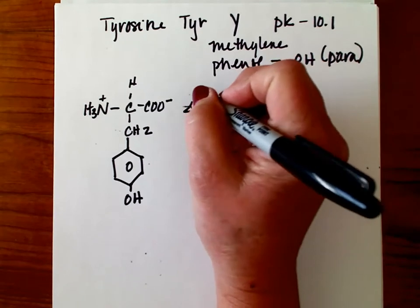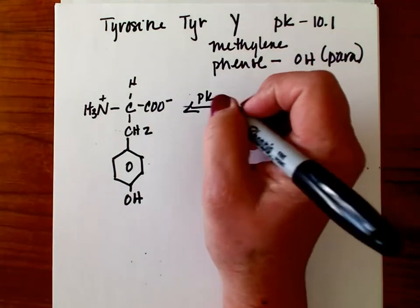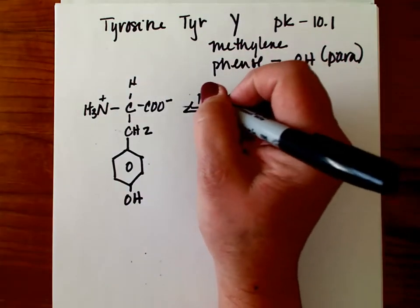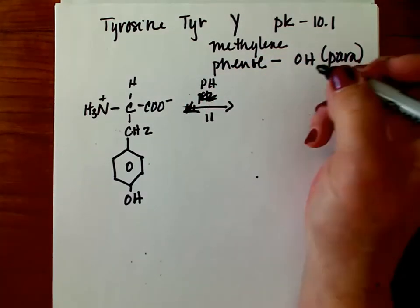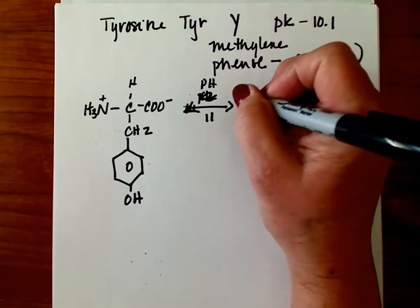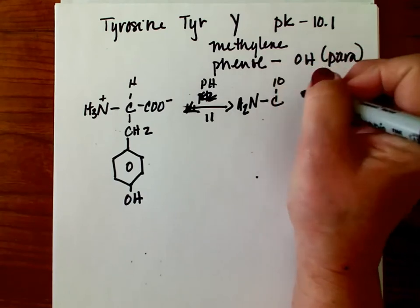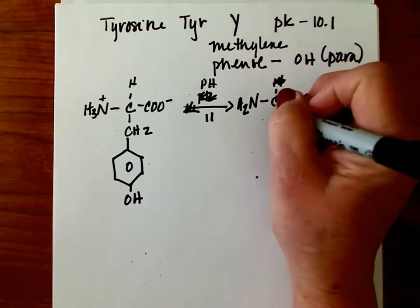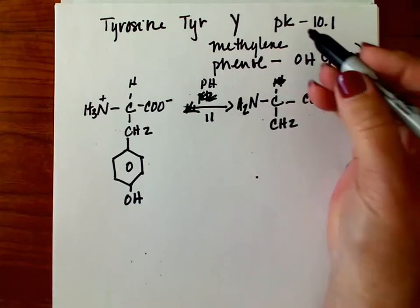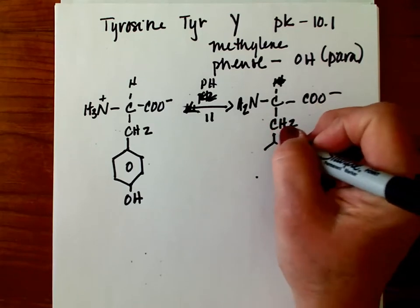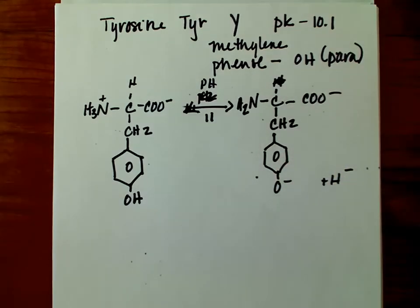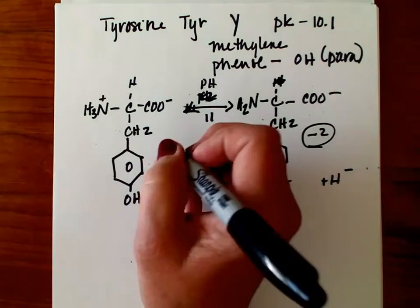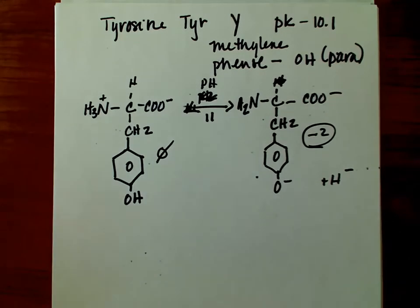However, at or above its pKa — let's say at pH 11 — by that point the alpha amino group has ionized, and we're also going to find that at pKa 10.1 that hydroxyl group has ionized. So now we're going to have an amino acid with an overall negative 2 charge. So at physiological pH it has a net charge of zero, and at or above its pKa it's a minus 2.